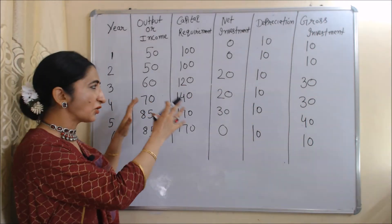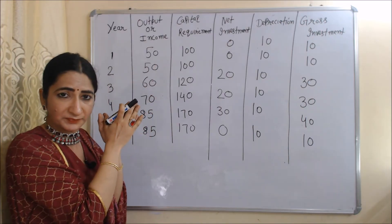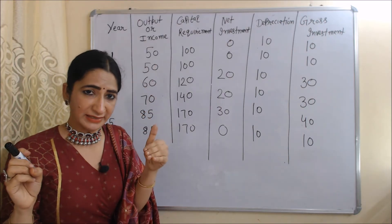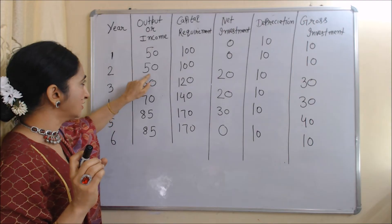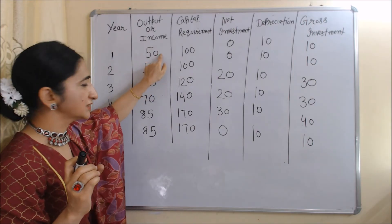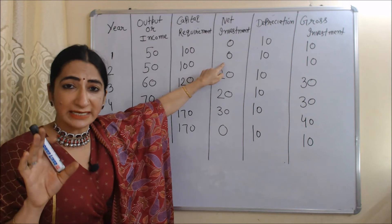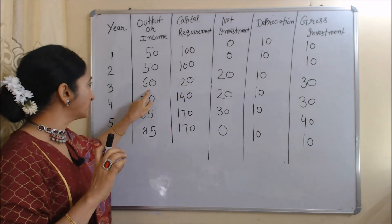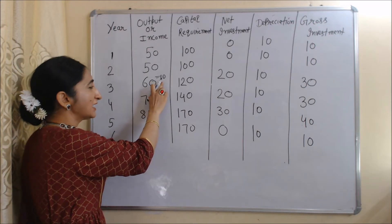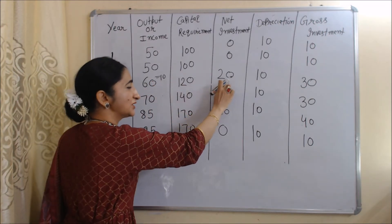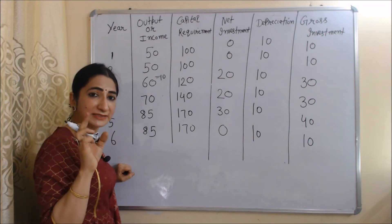Now we will see how much net investment changes due to change in income. Change in income is calculated by subtracting the previous year's income from the current year's. In the second period, change in income is 50 − 50 = 0, so change in net investment is also zero. In the third period, change in income is 60 − 50 = 10, and due to this change in income, investment changes by 20. Change in investment is double the change in income, confirming the accelerator value equals 2.